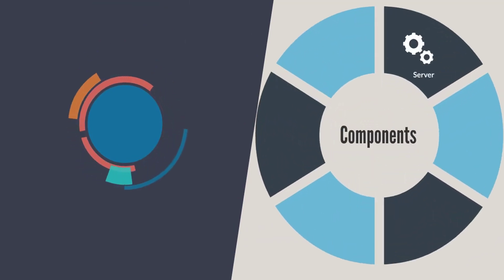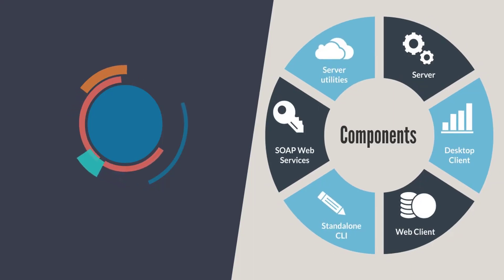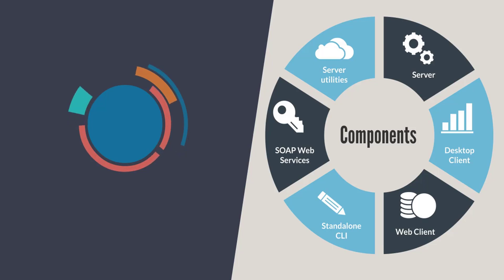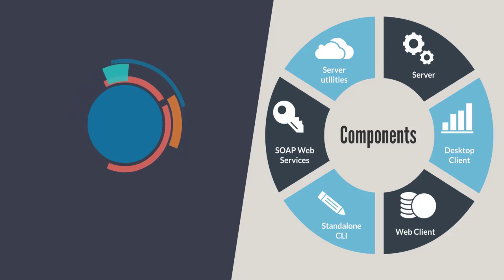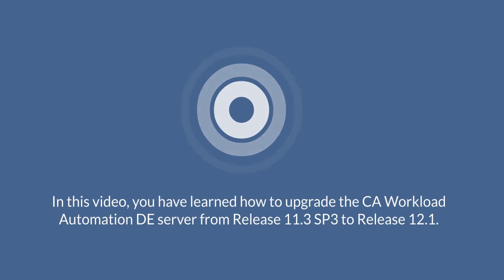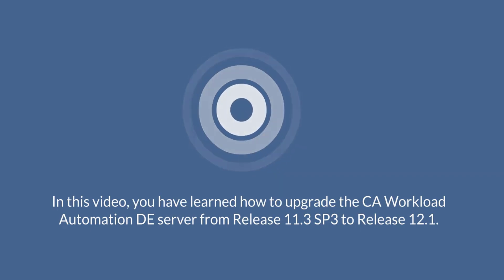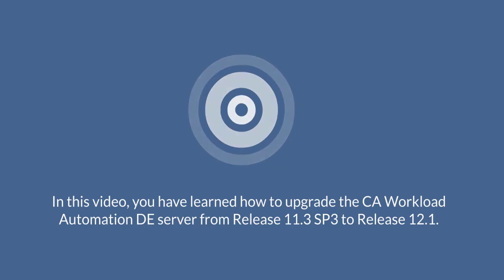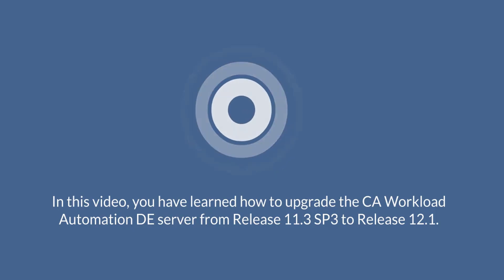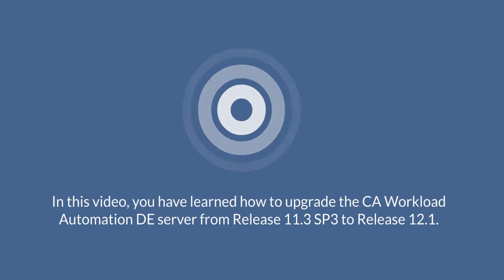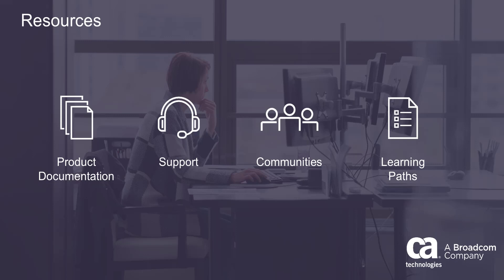Administrators can have greater control over the upgrade through enhanced logging and rollback procedures. We encourage you to upgrade your CA Workload Automation DE environment to the latest release. When you upgrade, ensure that all the components including the server, desktop client, web client, and other utilities are at the same release level. In this video, you have learned how to upgrade the CA Workload Automation DE server from release 11.3 SP3 to release 12.1. For more information about the upgrade, see the CA Workload Automation DE documentation.